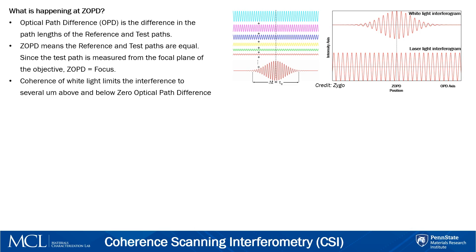Interference fringes appear in a narrow band, less than 5 microns centered around the focal plane, taking the form shown in the figure to the top right. We only see these fringes localized around the focal point because outside of the coherence length, light loses the ability to interfere in an observable way. Using a range of frequencies, as in the case of white light, results in a shorter coherence length, allowing the fringes to be localized around the ZOPD. The ZOPD itself is where the maximum intensity is observed.